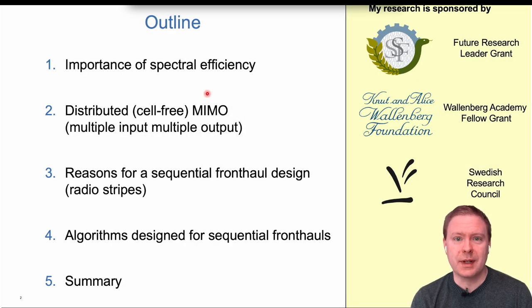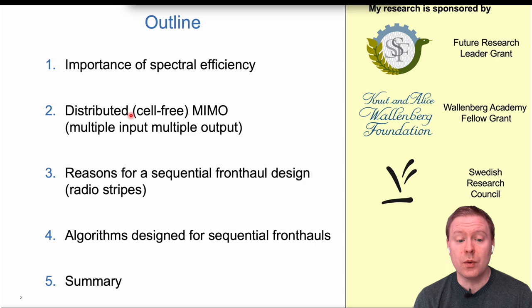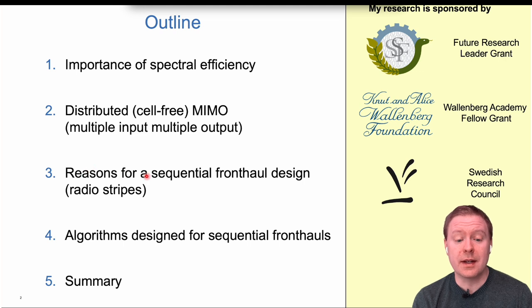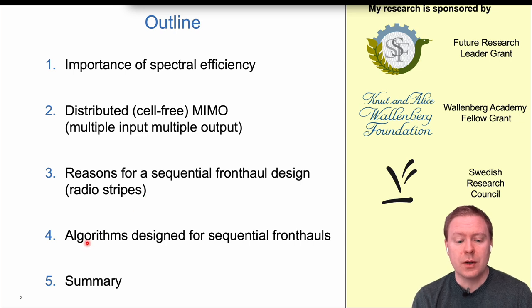In this keynote, I'll first discuss the importance of spectral efficiency as a performance metric — in particular, we want it to be uniform. Then I'll mention distributed or cell-free MIMO as a potential solution. There are issues with deploying this technology, leading us to a sequential fronthaul design, including something called radio stripes. I'll also discuss algorithms tailored to this particular fronthaul architecture.